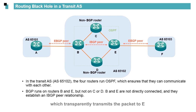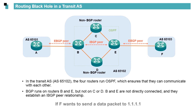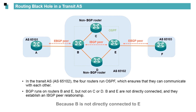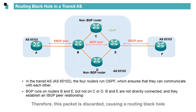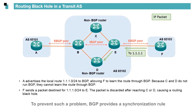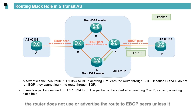C or D transparently transmits the packet to E. Upon receipt of the route, E transmits the route to F. If F wants to send a data packet to 1.1.1.1, it first sends the packet to E. Because B is not directly connected to E, E performs route iteration and sends the packet to C or D. However, BGP is not enabled on C and D, and they do not have the route 1.1.1.0/24. Therefore, this packet is discarded, causing a routing black hole. To prevent such a problem, BGP provides a synchronization rule: when a BGP router receives a route from an IBGP peer, the router does not use or advertise the route to EBGP peers unless it also learns the route from an IGP.